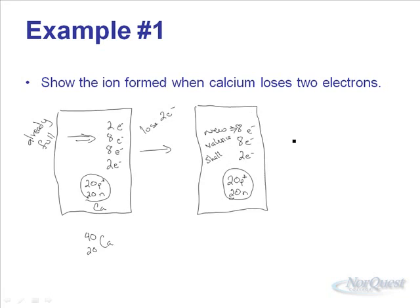We're missing two electrons now. We have 20 pluses but only 18 negatives, which means our atomic symbol changes. We call it Ca²⁺, because it has two extra positive charges. This is no longer a calcium atom — it's now a calcium ion, and it has different physical and chemical properties than a calcium atom because of this difference in charge.